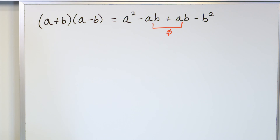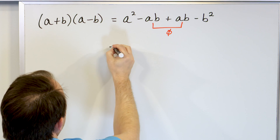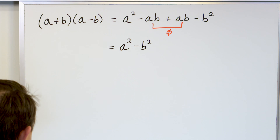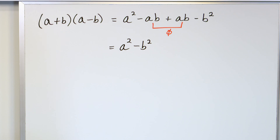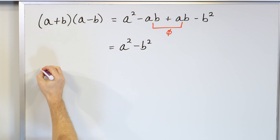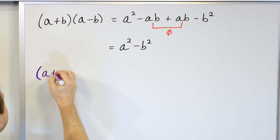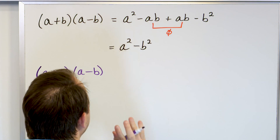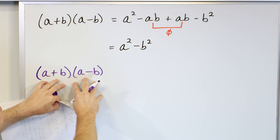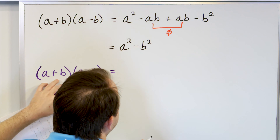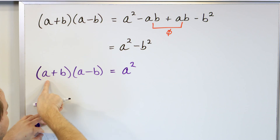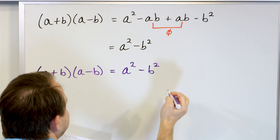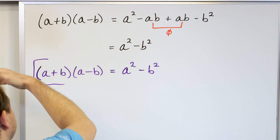So what you're going to end up having when you have a plus b times a minus b is just going to be a squared minus b squared. So what we really want to write down, something to remember for the future, is that basically anytime we're multiplying something of the form a plus b times a minus b, we can multiply it all out and cancel — and this cancellation will happen every single time you're multiplying any two binomials of this form.